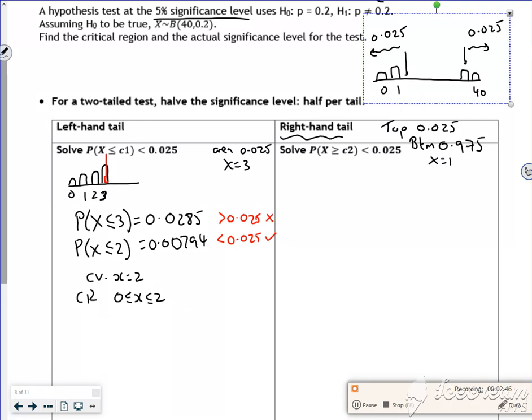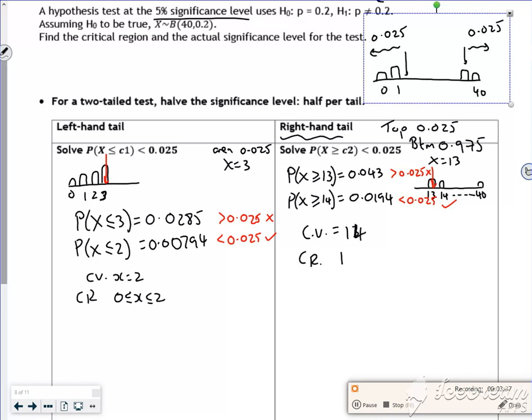That gives me x = 13 out, so it lies in the 13 bar, but I don't know where exactly. So I check P(x ≥ 13) and P(x ≥ 14). These give us 0.043 and 0.0194. The first is greater than 0.025, so that's out. The second is less than 0.025, so that's in. My critical value is x = 14 all the way up to 40.